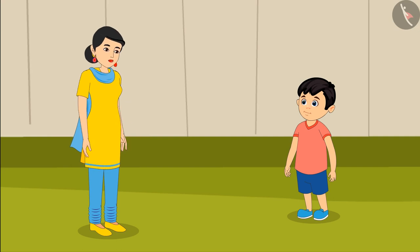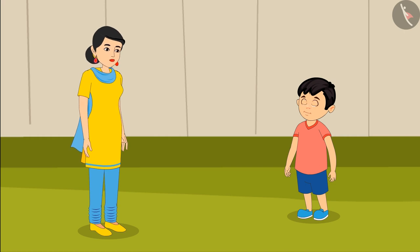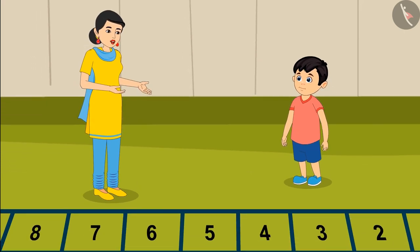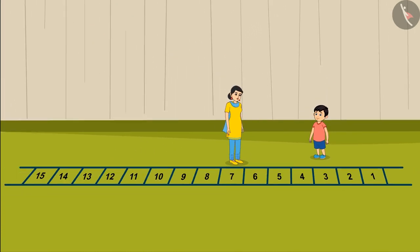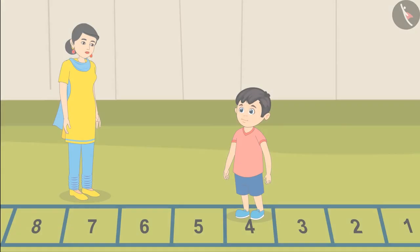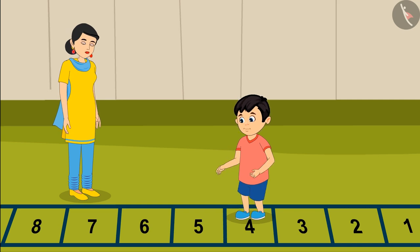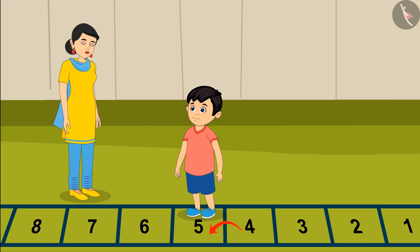Mom tells Jhotu: Just like you were jumping forward and backwards in your class, did you know it can be done with numbers too? Jhotu asks: How is that, mom? Mom explains: Look at these stairs I have drawn — on these stairs I have written numbers from 1 to 15. Will you go and stand on number 4? Jhotu jumps one step forward from number 4 and reaches number 5.